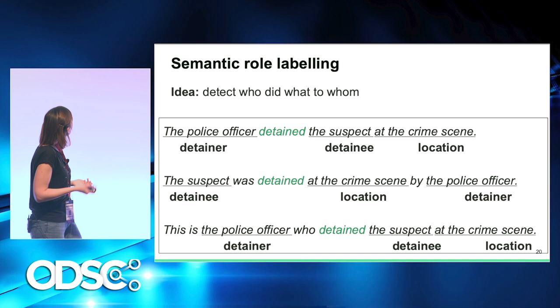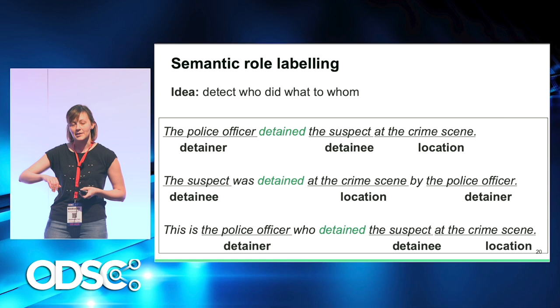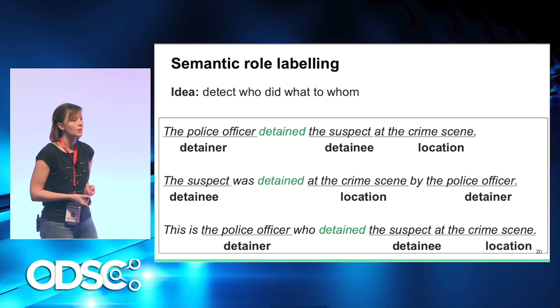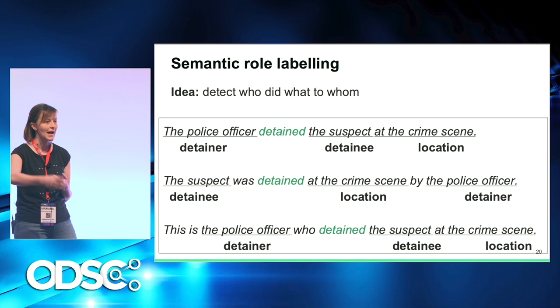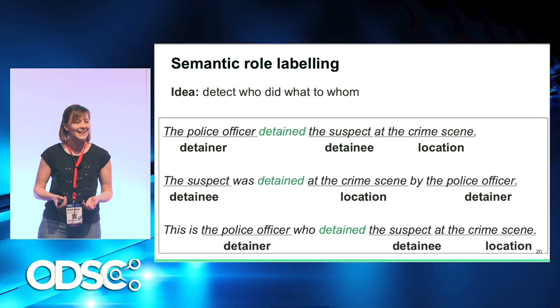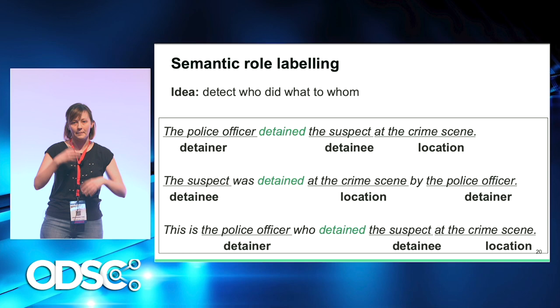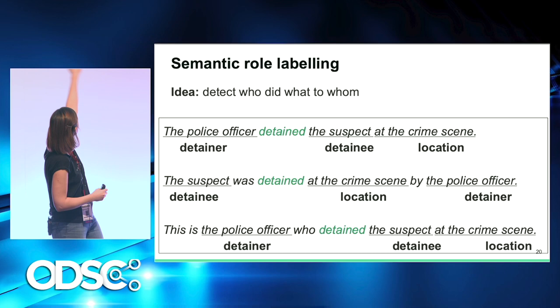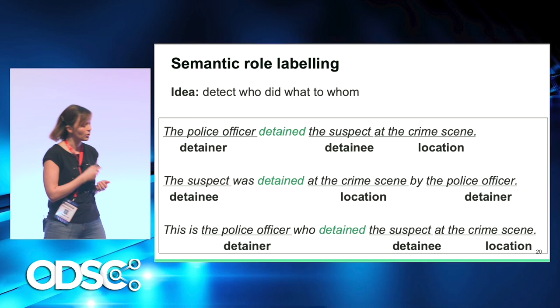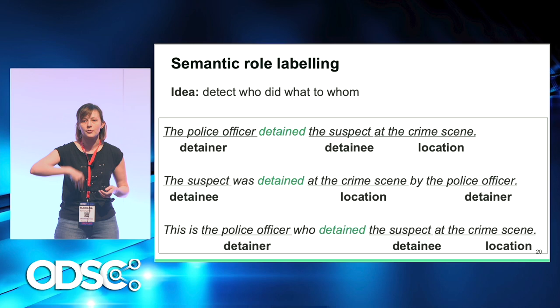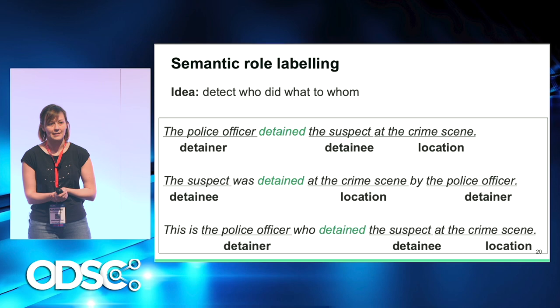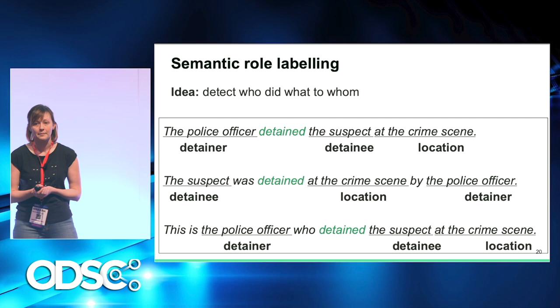Another thing I want to talk about is semantic role labeling, also called shallow semantic parsing. The idea is to find semantic roles of a certain event. If the event is to detain somebody, there are semantic roles like the detainee, the detainer, and additional roles like the time of detainment, location, manner, and so on. With three paraphrased sentences of the same meaning, the roles stay attached to the same person — the police officer is always the detainer. Semantic role labeling is frequently used for fact extraction tasks.